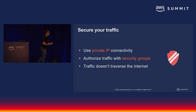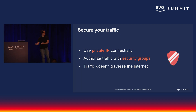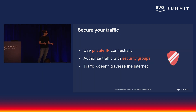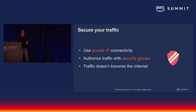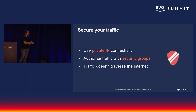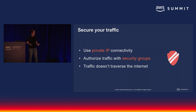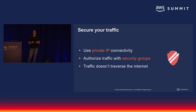PrivateLink allows you to create a private link between your own VPC and a service — either an AWS service or a shared service running in some other VPC, even if that other VPC is in a different account. You get a private IP, you get an elastic network interface, and you can apply security groups to that interface. This means you get to control exactly what traffic goes to that service endpoint, and your traffic does not traverse the internet. It's almost as if the service is running inside of your VPC with only private IP connectivity.